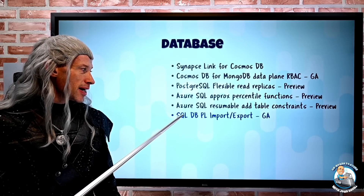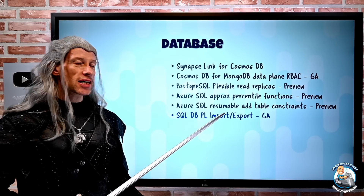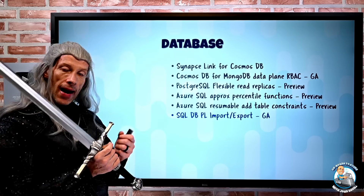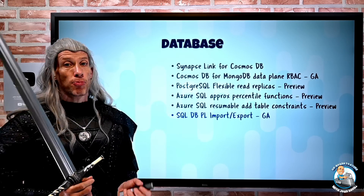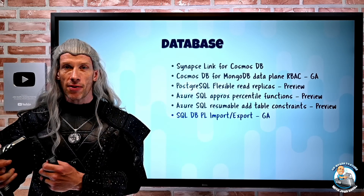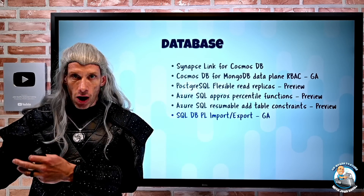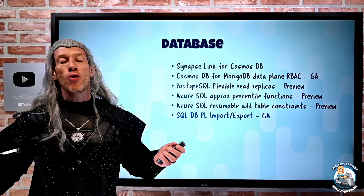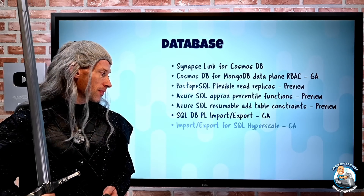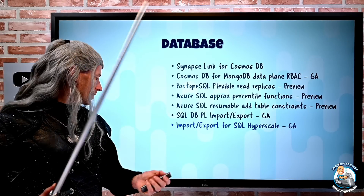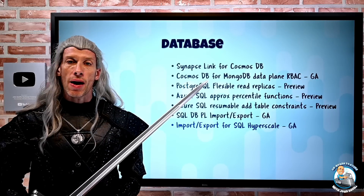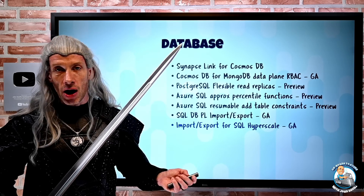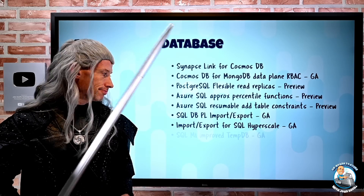SQL database private link import export is GA. This is the import export service which uses a private endpoint to the SQL database and a private endpoint to my blob storage — maybe I've got my BACPAC files in there — to do complete import export all through managed private endpoints. And speaking of import export, it's now available for SQL hyperscale as well. Previously it was all other tiers except hyperscale, and now we have hyperscale.